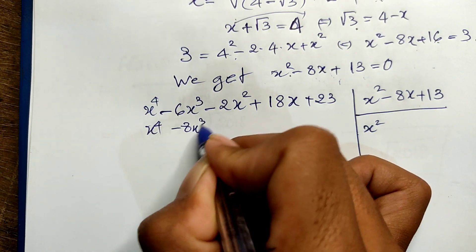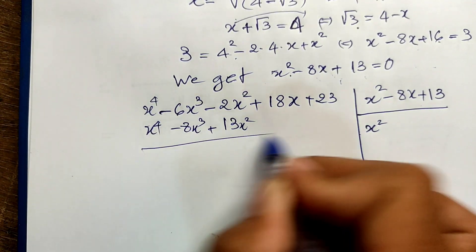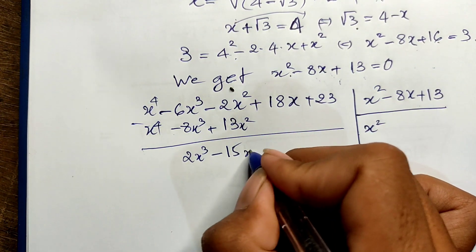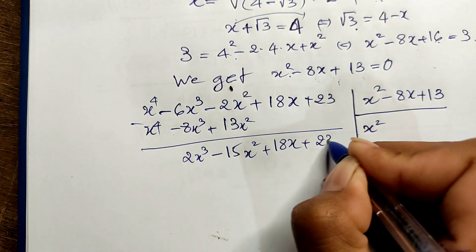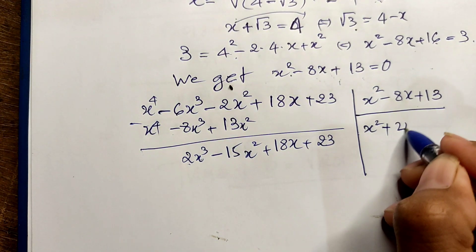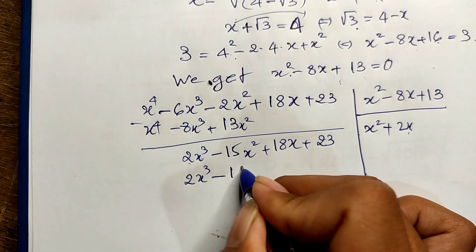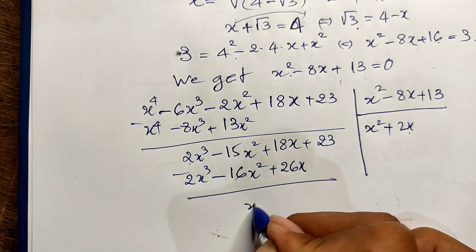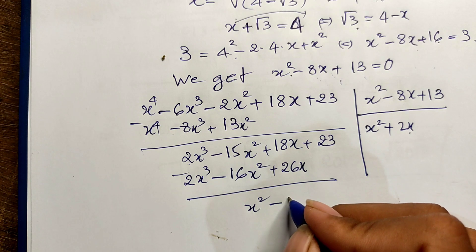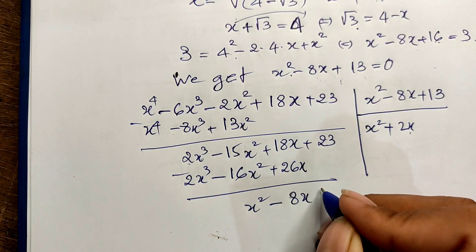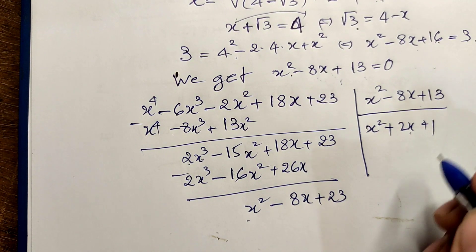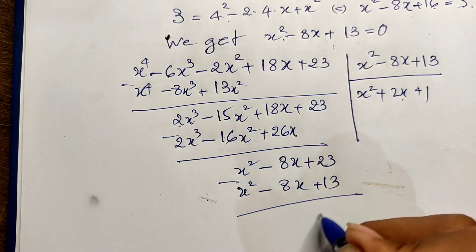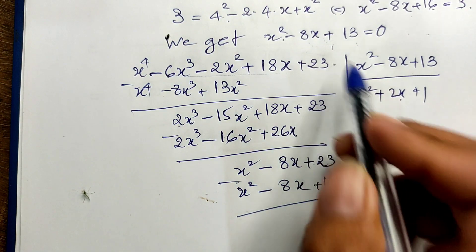Taking x² times (x² minus 8x plus 13), I get x⁴ minus 8x³ plus 13x². Subtracting from the numerator, the remainder becomes 2x³ minus 15x² plus 18x plus 23. Then taking 2x times (x² minus 8x plus 13) gives 2x³ minus 16x² plus 26x. Subtracting again leaves x² minus 8x plus 23.